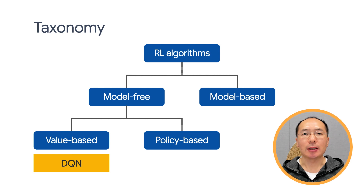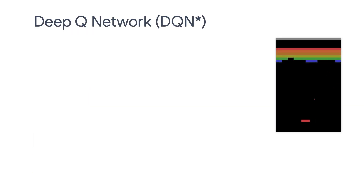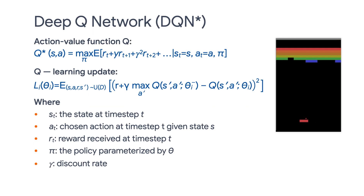Remember that DQN is a kind of value-based method. DQN stands for Deep Q-Network. Here, Q is what we call the action value function. It basically means if the agent is in a state and is going to take action A,